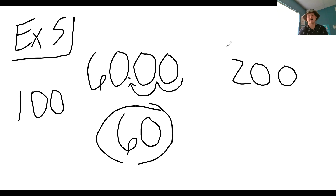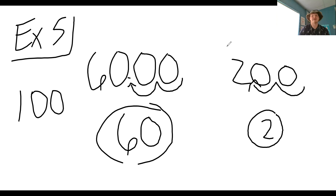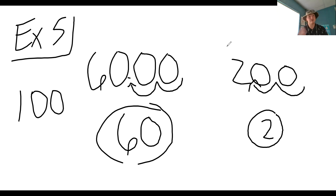And 200 divided by 100 — using the same method, you get rid of two zeros and you're left with two. Whenever you're dividing something by 10, by 100, by 1,000 — you're just getting rid of those zeros. Dividing by 10 removes one zero, by 100 removes two zeros, by 1,000 removes three zeros, by 10,000 removes four zeros.